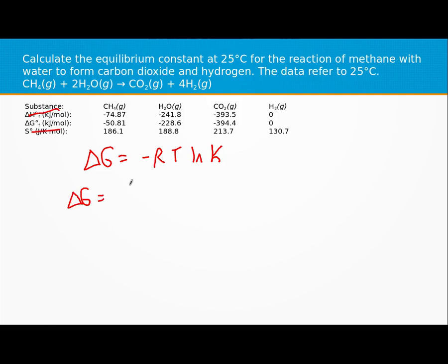We're going to get our delta G from products minus reactants. So I have one carbon dioxide and four hydrogens as products, minus the reactants, so I have one methane and two waters.